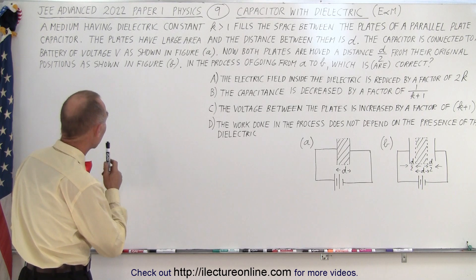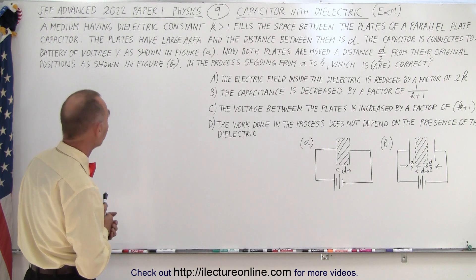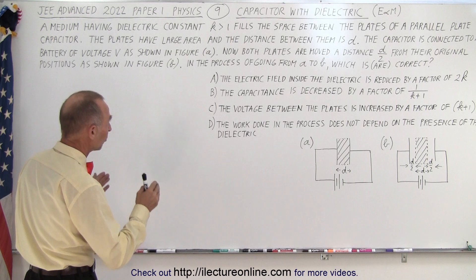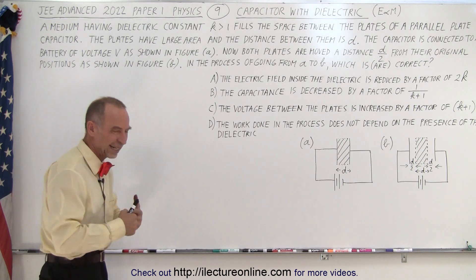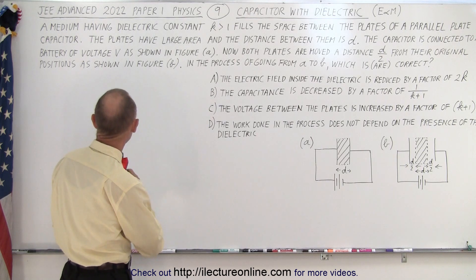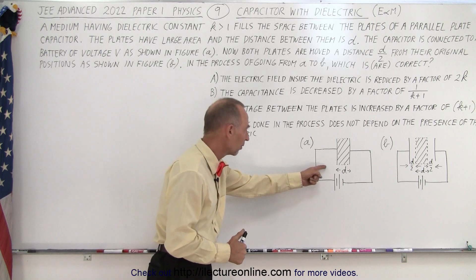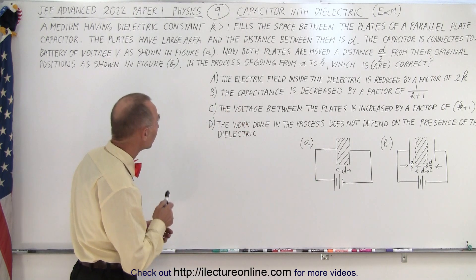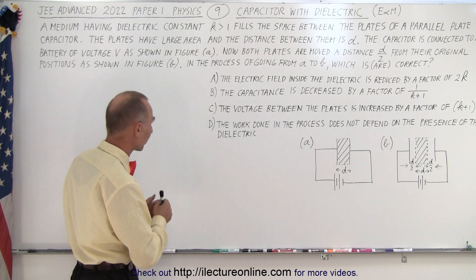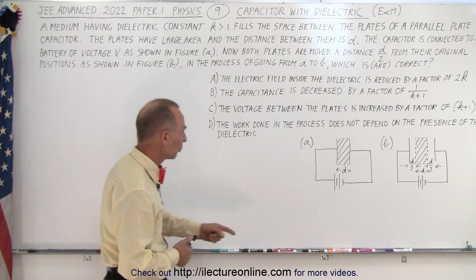A medium having dielectric constant k greater than 1 fills the space between the plates of a parallel plate capacitor. The plates have large area and the distance between them is d, so it's like an ideal capacitor — small d, large area. The capacitor is connected to a battery of voltage V as shown in figure A. Now both plates are moved a distance d/2 from their original positions as shown in figure B, so they're moved backwards in both directions.